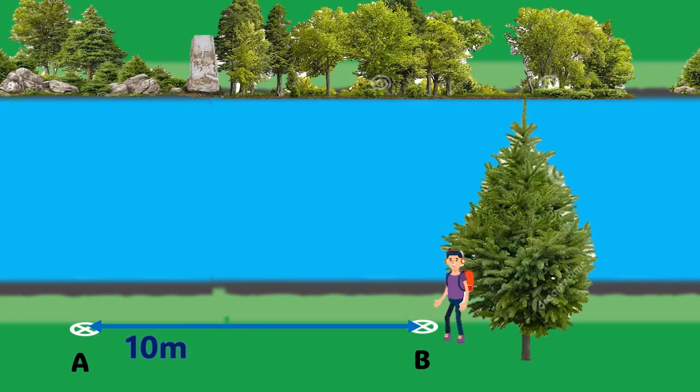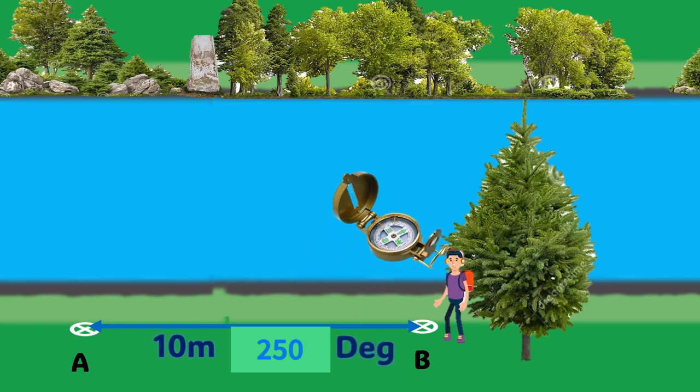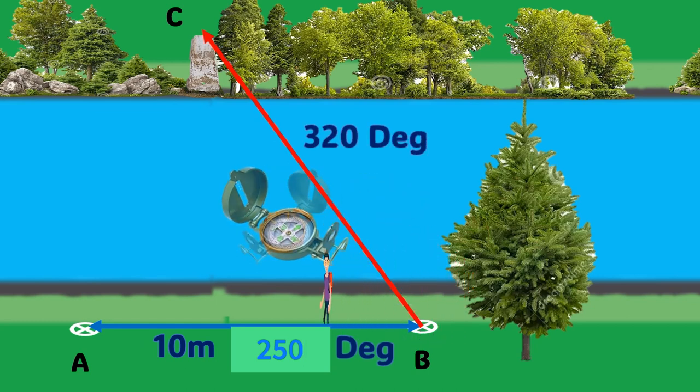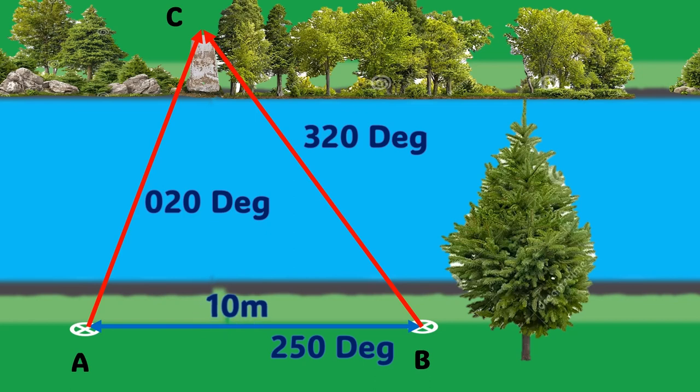Standing at point B, you aim your compass towards point A and note down the reading as 250 degrees. Now you point your compass to that rock, let's call it point C, and find its bearing to be 320 degrees. You walk back to point A and aim towards point C and take reading as 020 degrees. Now you know that B to A bearing was 250 degrees, so reciprocal bearing from A to B will be 250 minus 180, or 070 degrees.